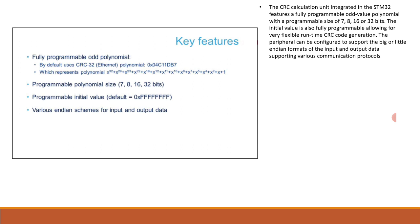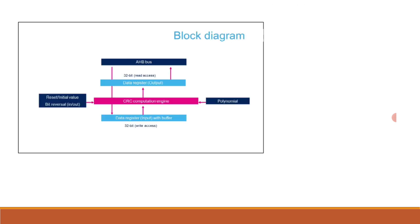Let's have a quick look at the block diagram of the CRC calculation unit. It is connected to the AHB bus for optimal performance. It contains a single 32-bit register used for both writing and reading by either the CPU or DMA controller. The initial value, I/O bit reversal, and polynomial coefficients are configured by software during initialization. The CRC computation engine holds the result of any previous CRC calculation, which becomes the initial value for the next calculation, allowing chained CRC computation over blocks.